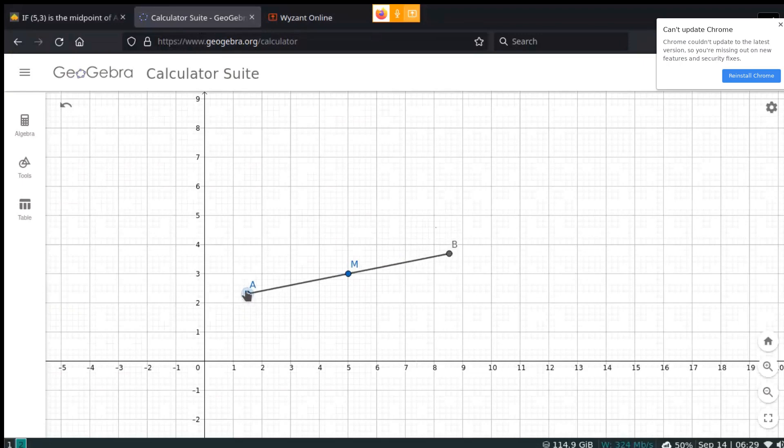As you can see, if I move this point A around, the point B could really be anything. It really could be anything I want it to be.